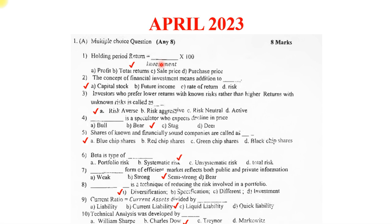Holding period return is equal to dash upon investment into 100 — the answer is total return. The concept of financial investment means addition to dash capital stock. Investors who prefer lower return with known risk rather than higher return with unknown risk are called risk averse. Dash is a speculator who expects a decline in price — that is a bear. Shares of unknown and financially sound companies are called blue chip shares. Beta is a type of systematic risk.